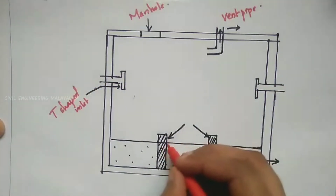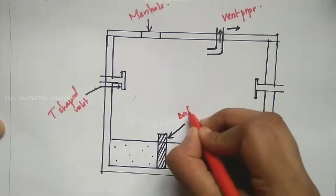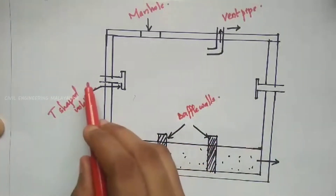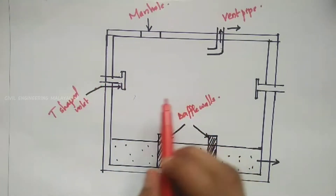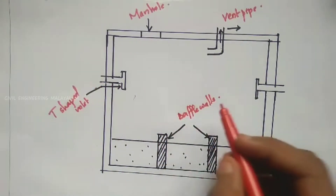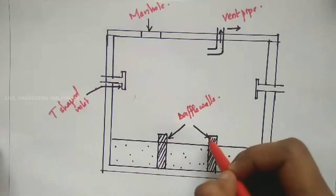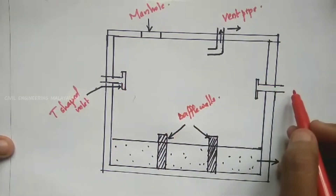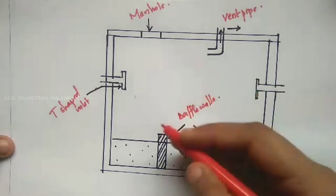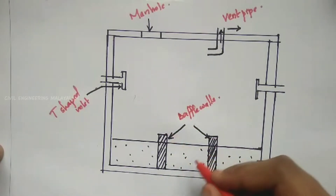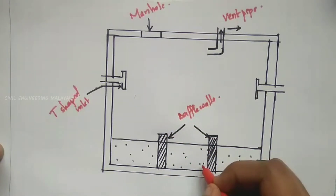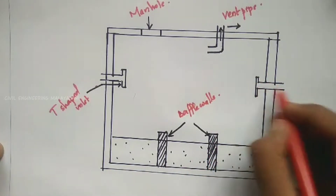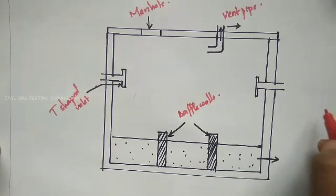We can provide two baffle walls. The wastewater enters through the inlet, passes the baffle walls, and exits through the outlet. The sludge is decomposed and settles. After the sludge settles, the wastewater flows into the soak pit.